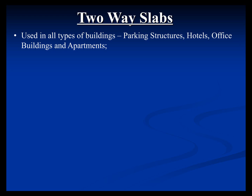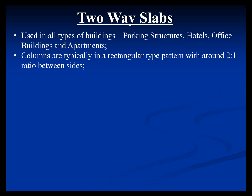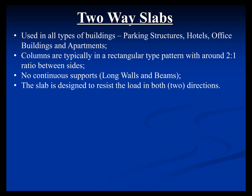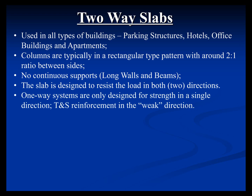Two-way slabs are used in all types of buildings. Typically, if you have a rectangular system less than two-to-one, that generates an economical two-way slab. If much more than that, the system becomes more of a one-way slab and beam system. You typically have no continuous supports — no walls or girder lines — so just columns provide the vertical resistance, with localized shear walls. The slab has to be designed to act in two directions because you have no beams or girders. One-way slabs are only designed in one direction, with 0.0018 or 100 psi in the weak direction for crack control.